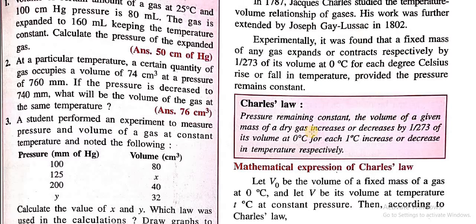Pressure remaining constant, the volume of a given mass of a dry gas increases or decreases by 1/273 of its volume at 0 degrees Celsius for each 1 degree Celsius increase or decrease in temperature respectively.